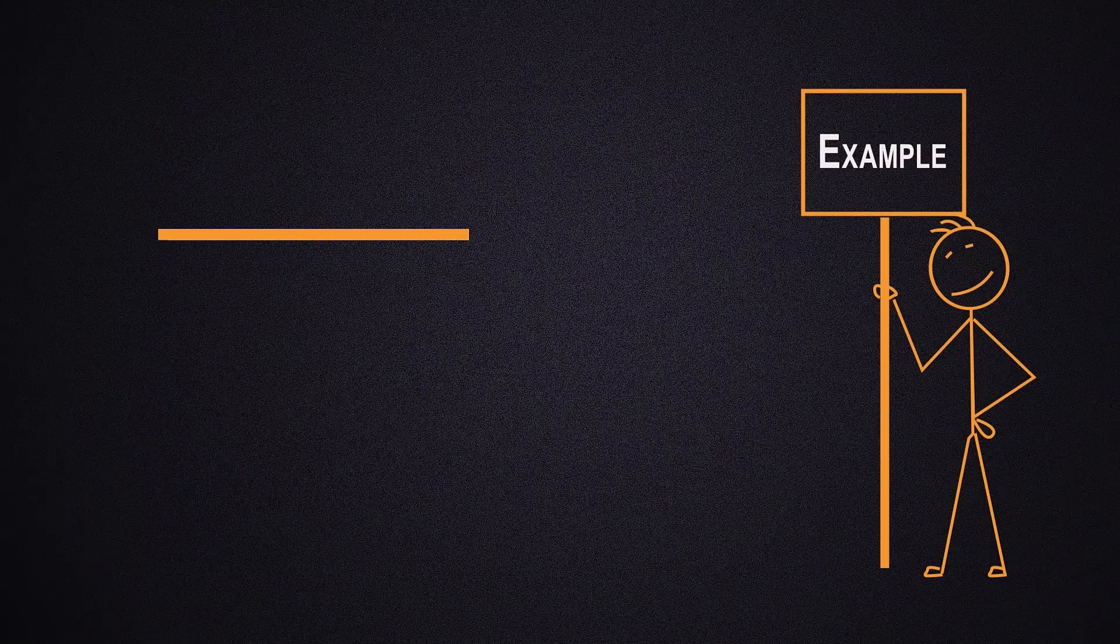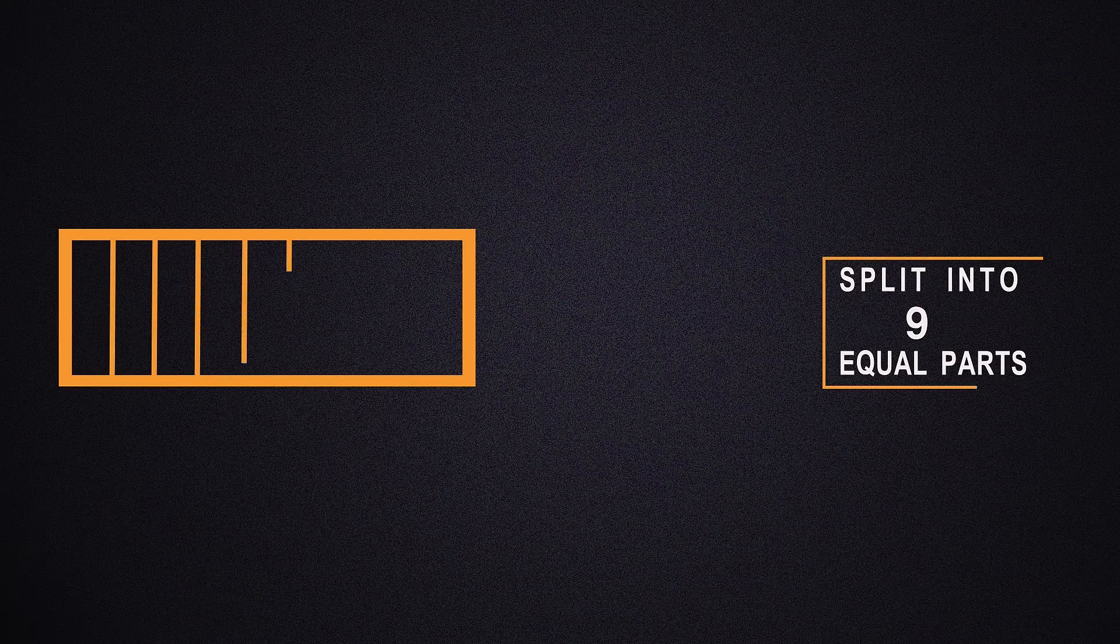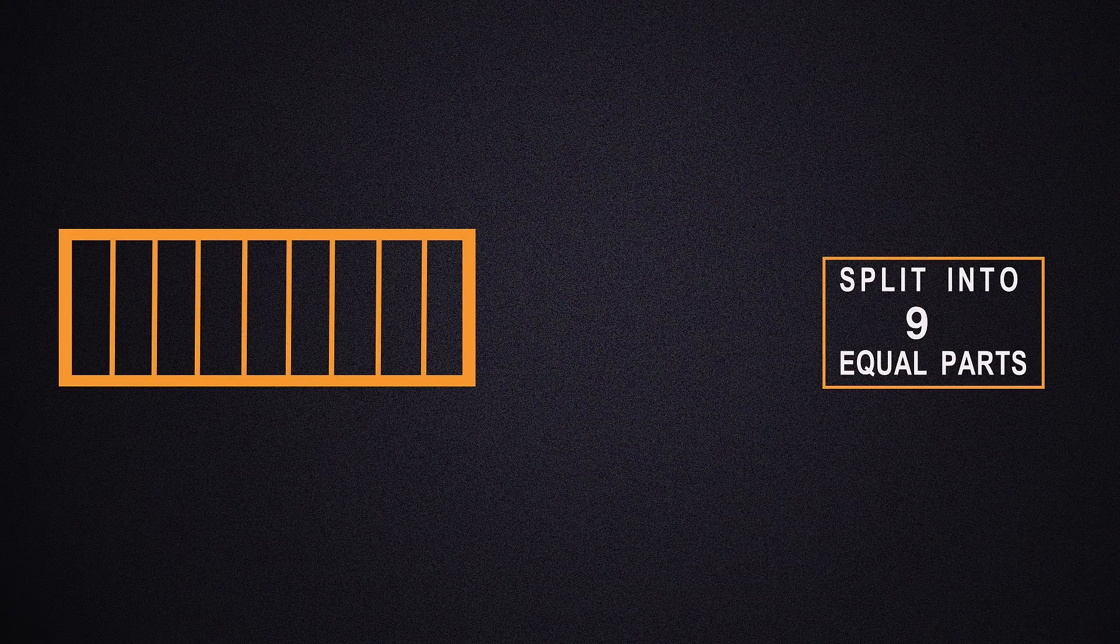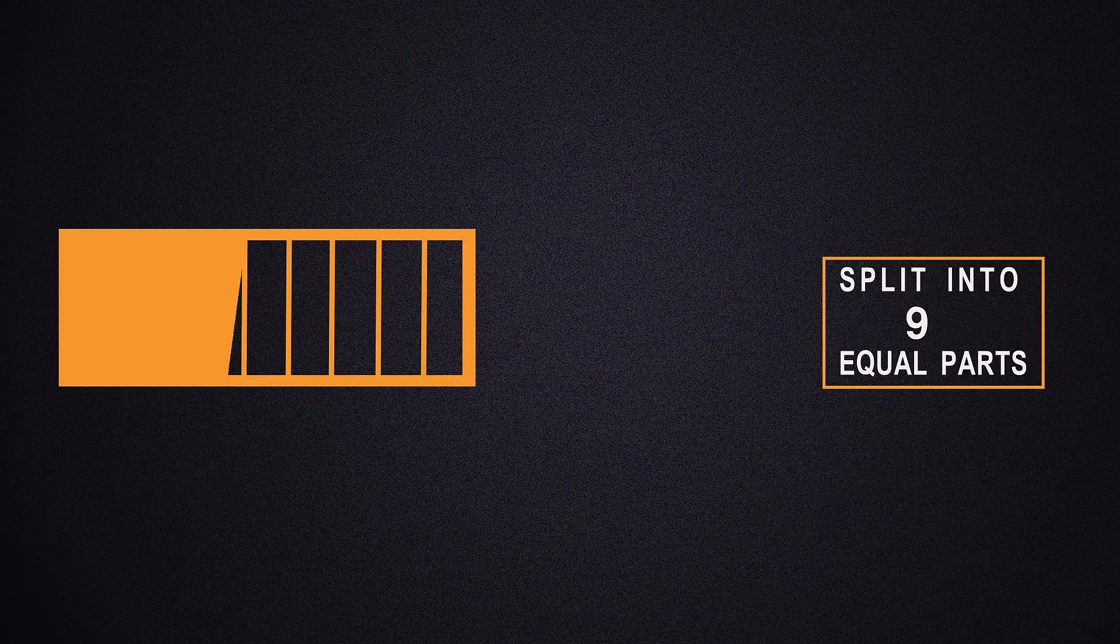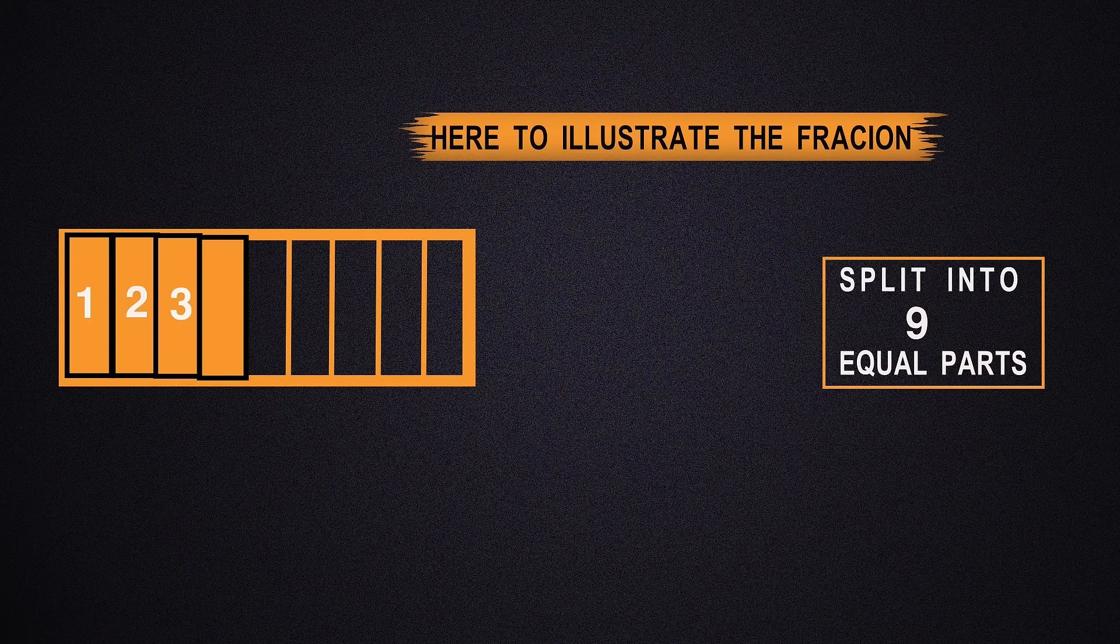In this example, a rectangle is shown. This rectangle is split into nine equal parts. Now one, two, three, four parts are shaded and five parts are left unshaded.